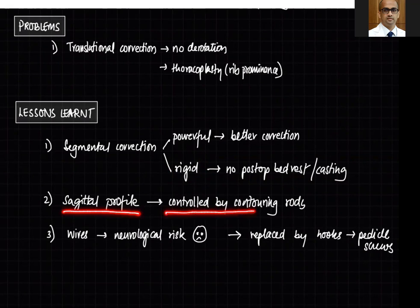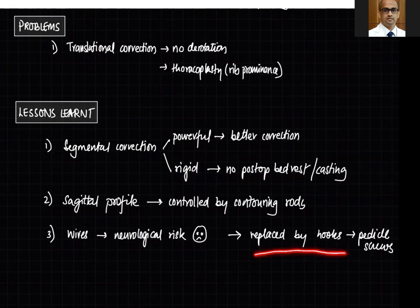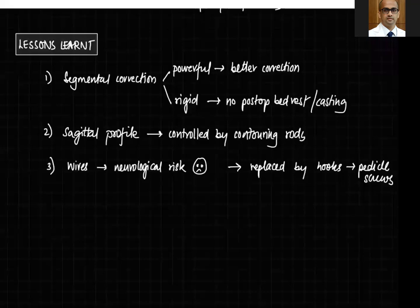Luque instrumentation controlled the sagittal profile through rod contouring. However, the sublaminar wires posed a neurological risk because they enter the spinal canal, and they were eventually replaced by hooks and pedicle screws. Wire constructs are still used in salvage situations or for translating the apex in more rigid cases, but they are not commonly used nowadays.